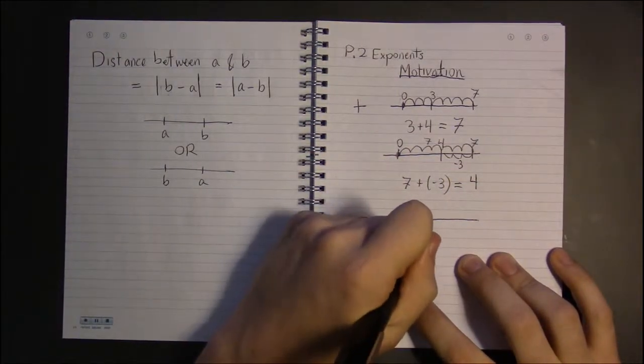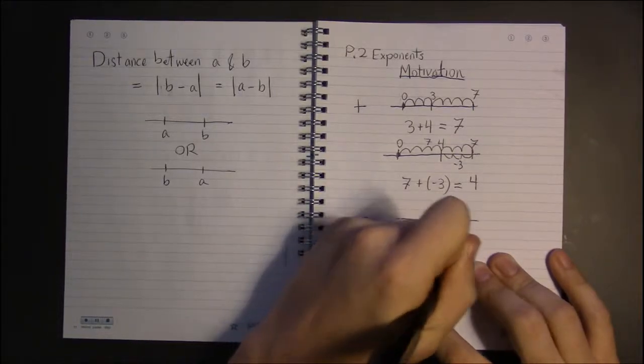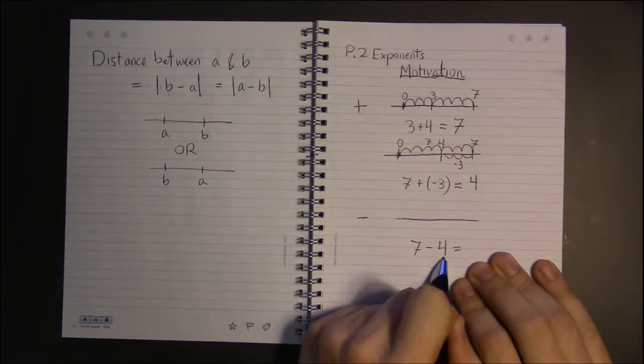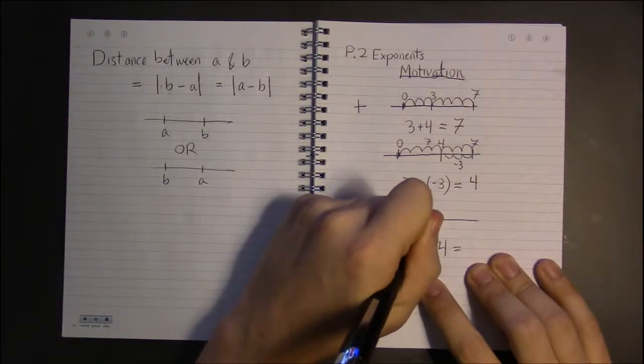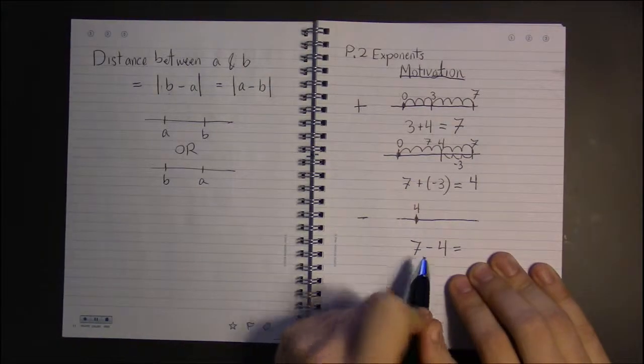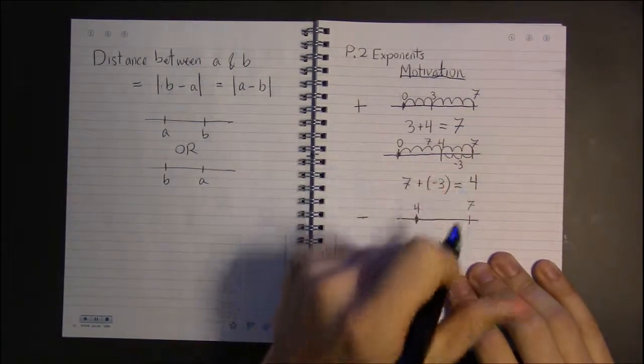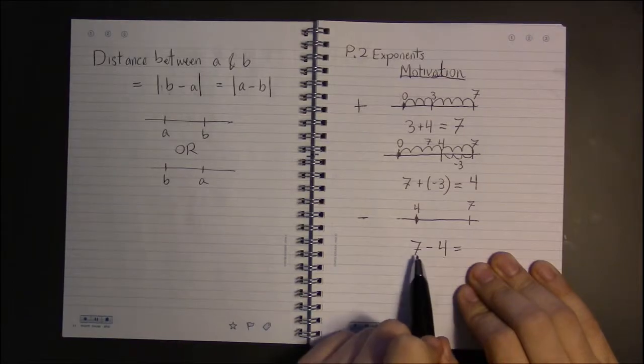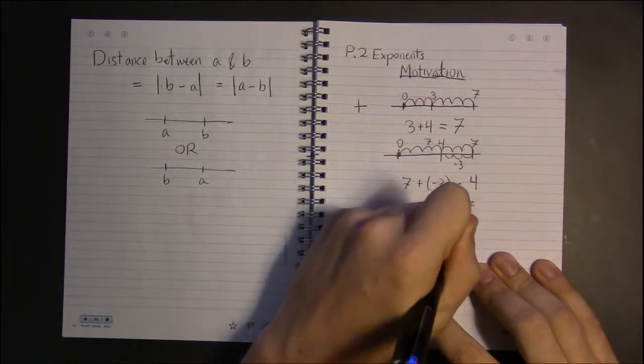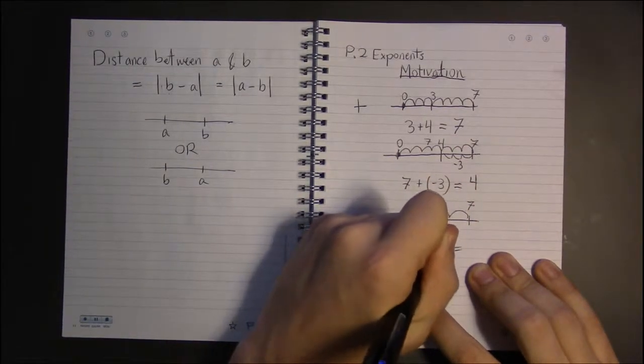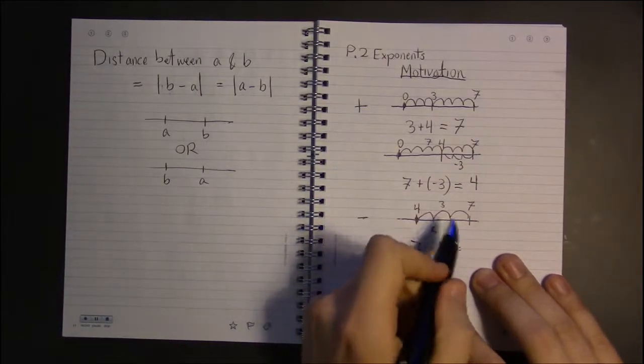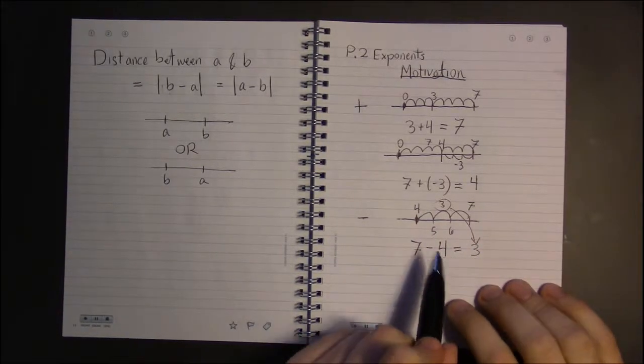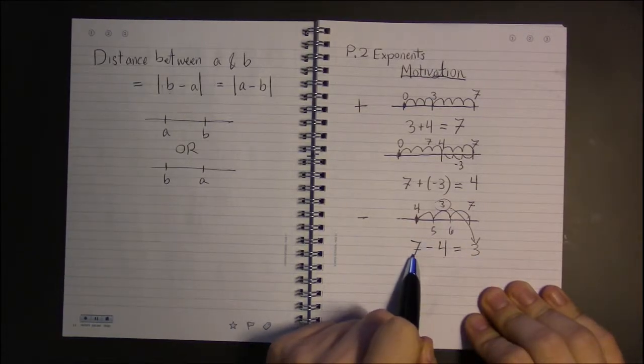Subtraction is the following. Instead of starting at 0, we're going to start at the second number. You start at 4. And we're trying to get to 7. So, how many steps does it take to get, starting at 4, to get to 7? Well, 1, 2, 3 steps from 5 to 6 to 7. So, our answer is simply 3. Starting at 4, it takes you 3 steps to get to 7.